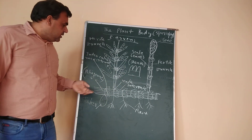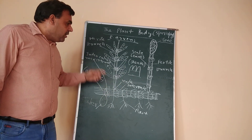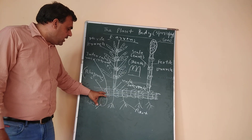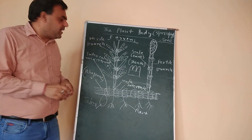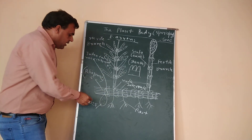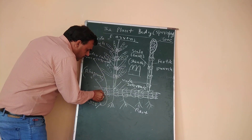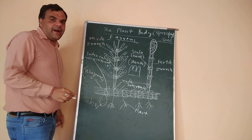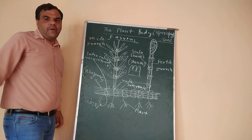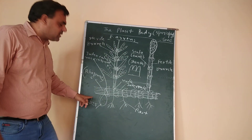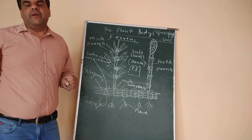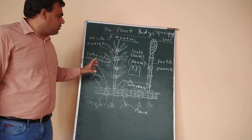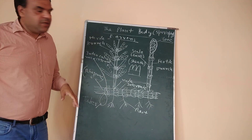Sometimes, branch primordia in the rhizomes are converted into asexual reproductive parts called tubers. These tubers are involved in the asexual reproduction of Equisetum.